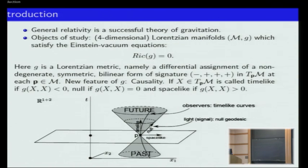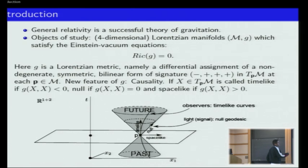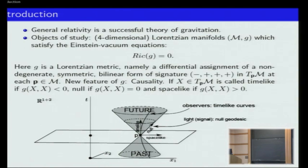The manifold is a four-dimensional manifold, and by Lorentzian I mean that G is a Lorentzian metric — that is to say, at each point G is a non-degenerate symmetric bilinear form of a specific signature. What is very important is to note the signature: in the Riemannian case we only have pluses, while in the Lorentzian case we have one direction that has a minus. By definition, that simply means there exist vectors whose norm is negative.